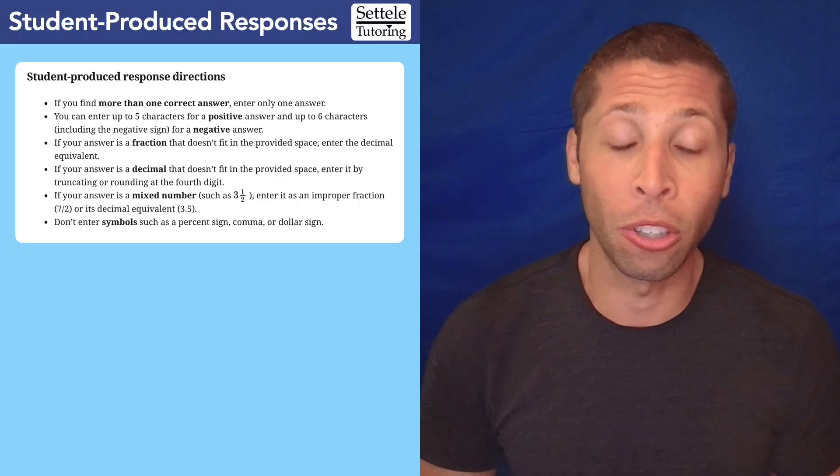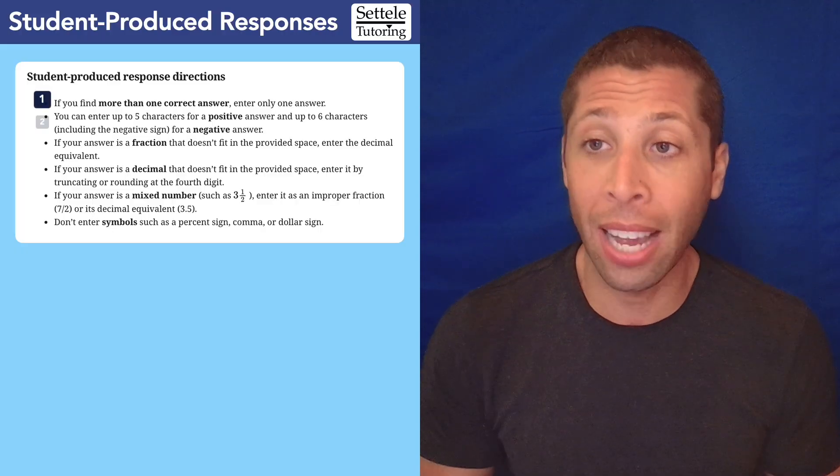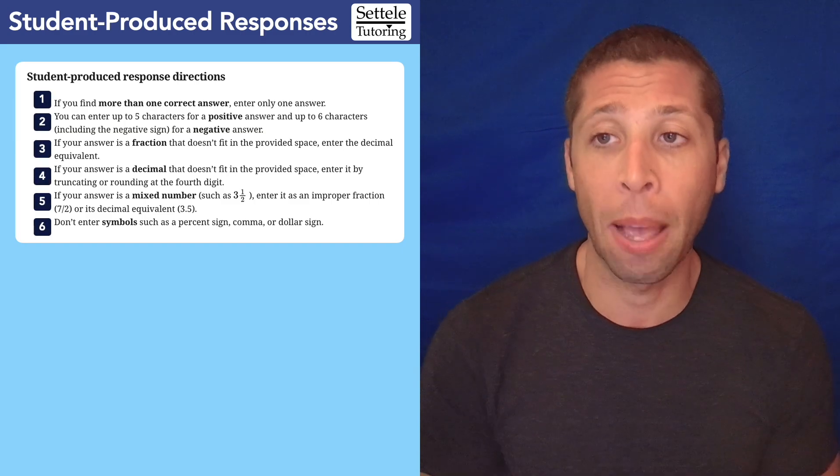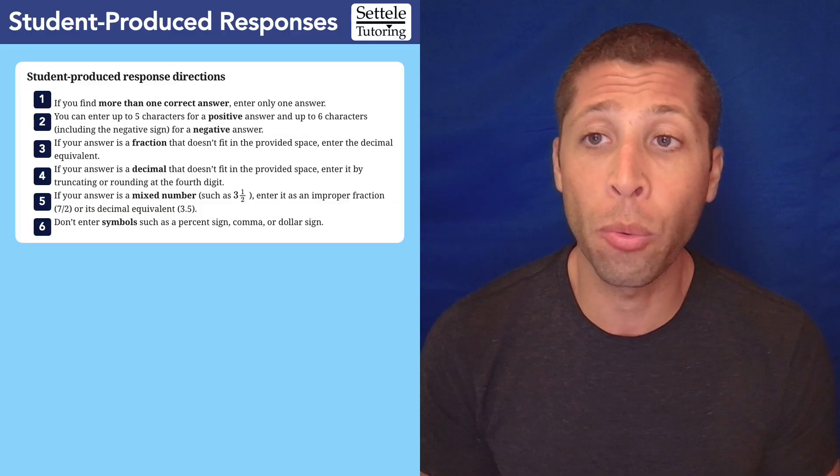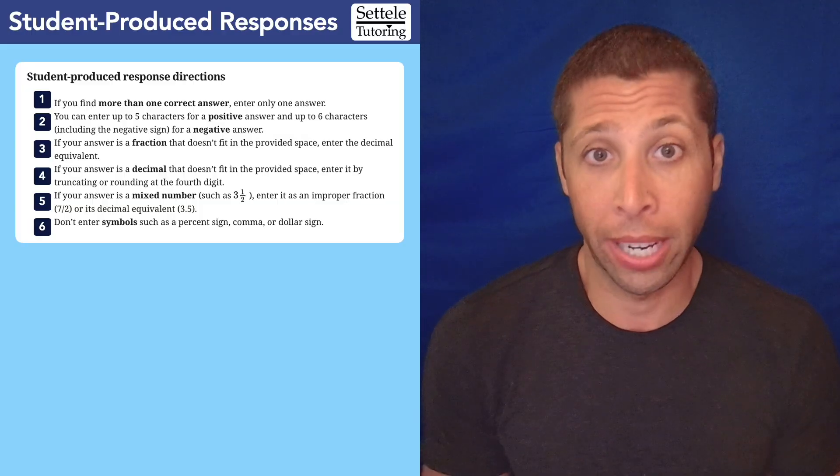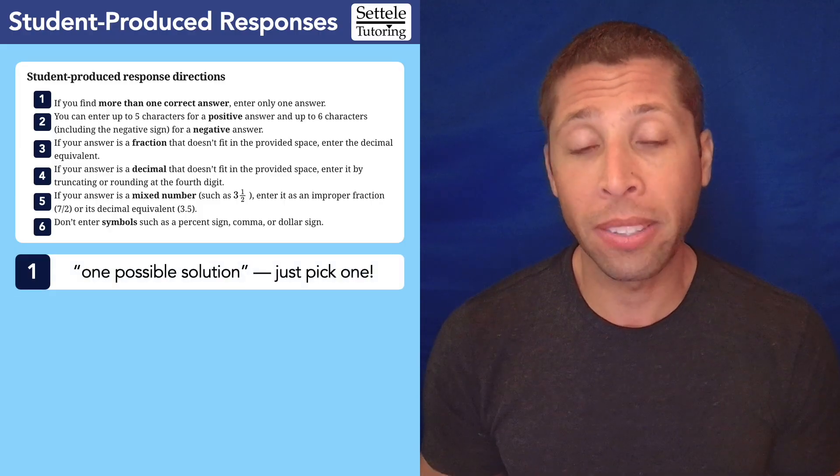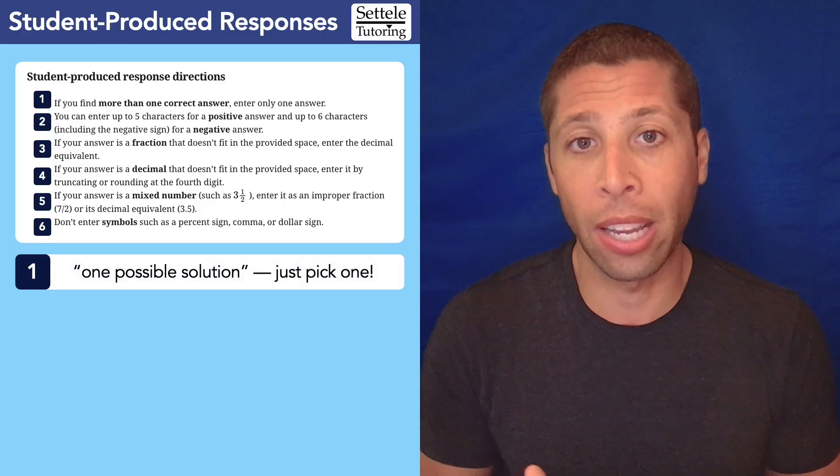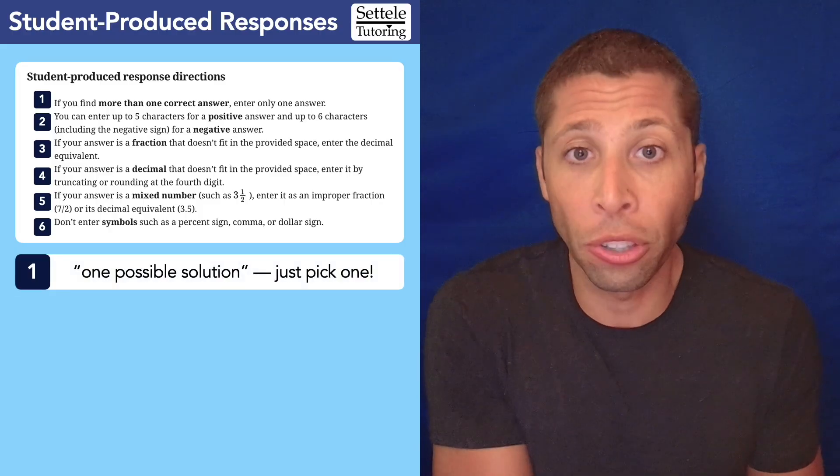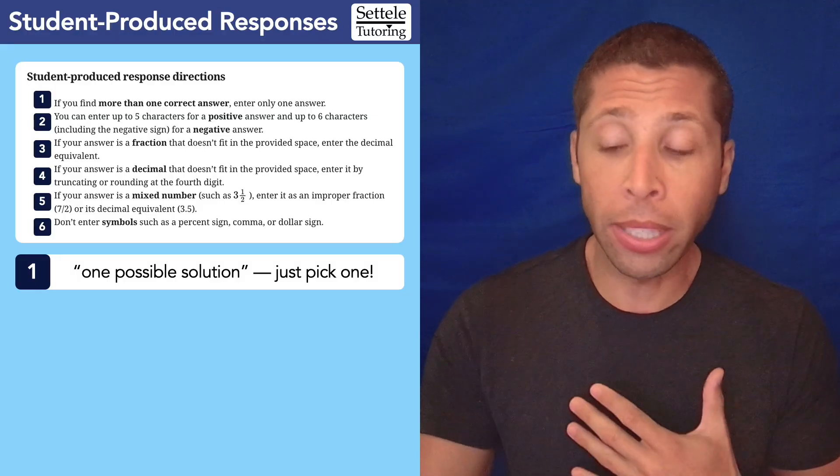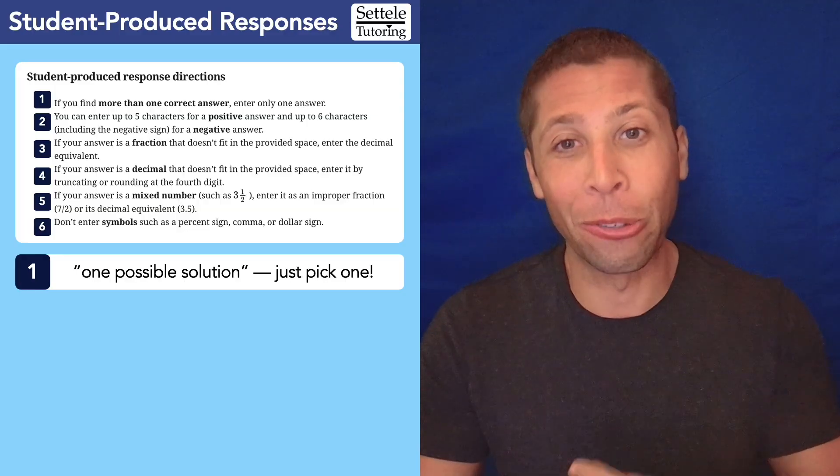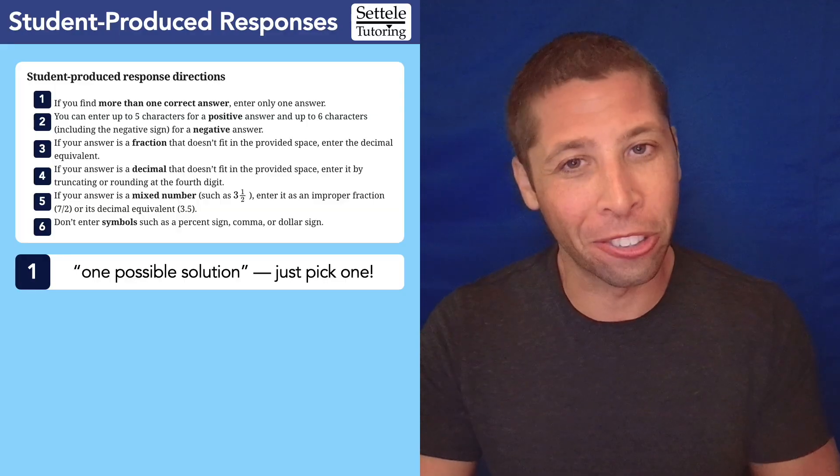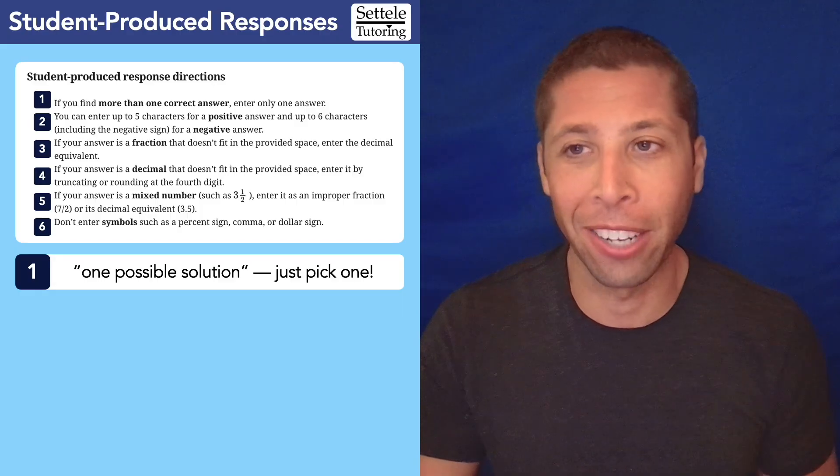These are exactly what you'll see in the BlueBook app when you take a test. There are six rules. Let's label them so it's easy to talk about them and just go one by one. Number one here, if you find more than one correct answer, enter only one answer. This doesn't apply very often, but sometimes you will see a question that's asked like, what is one possible solution to this equation? Just pick one. If they do give you a specific instruction saying that they want a positive solution, a negative solution, an integer solution, make sure you follow that instruction.